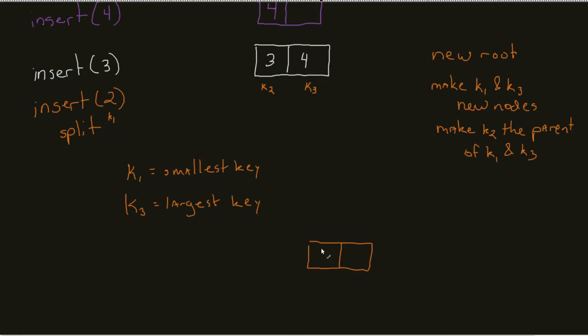So K1 being 2 gets its own node and K3, 4 gets its own node. Both of those are in turn going to have that K2, the middle key, be its parent. And so what this allows me to do is sort of maintain a very limited size.